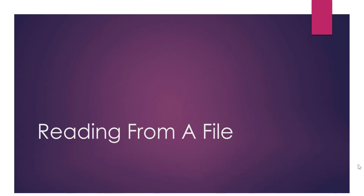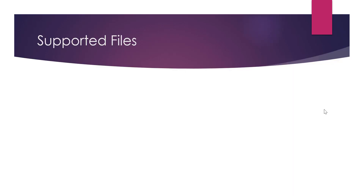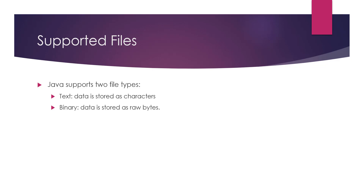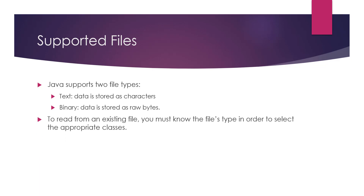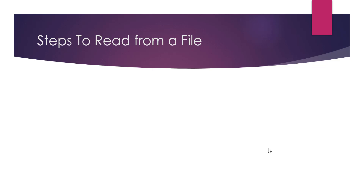In this video, we will see how we can read from files in our Java application. Java supports two types of files. The first type is text files where the data is stored as characters, and the second type are binary files where the data is stored as raw bytes. You need to know the type of file you have to use the appropriate class to read or write to that file. We will need the path of that text file to create a File object in Java, mapping the Java object to the actual file.